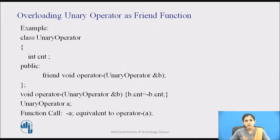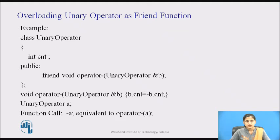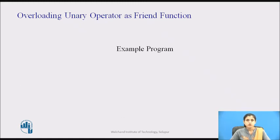Here we'll see overloading of the unary minus operator with a friend function. Operator minus is a friend of the unary operator class. As we know, a friend function that overloads a unary operator accepts one argument, so we need to pass the object as an argument. The function is declared inside the class with the keyword friend and defined outside the class.